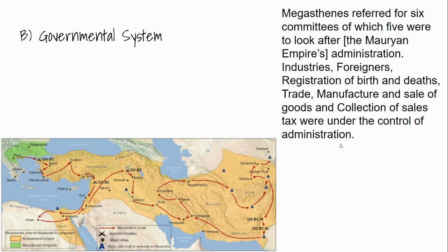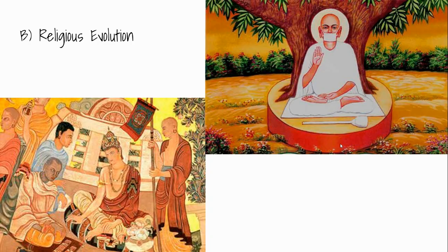Chandragupta also developed a relationship with the heirs to Alexander the Great. Alexander was stopped and did not conquer South Asia around this time, and the Mauryan Empire developed a working relationship with the Seleucids. We have some Greek and Roman sources referring to Chandragupta and to South Asia in general. These governmental committees allowed central bureaucracy to spread and consolidate control over the empire.